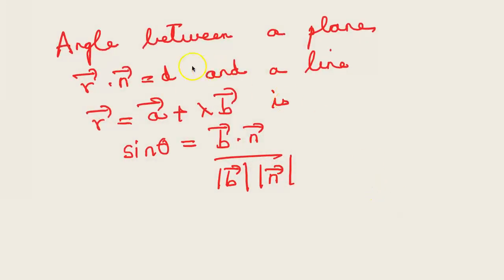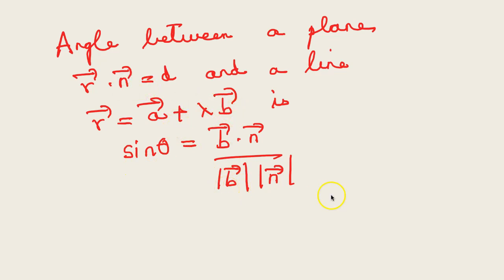Lastly, the angle between a plane in vector form r·n = d and a line r = a + λb is given by sin θ = (b·n) / (|b| |n|).